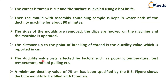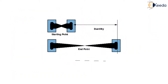The ductility value is affected by factors such as pouring temperature, test temperature, and rate of pulling. A minimum ductility value of 75 cm has been specified by the Bureau of Indian Standard. The figure shows the ductility mold to be filled with bitumen — that is the ductility mold.